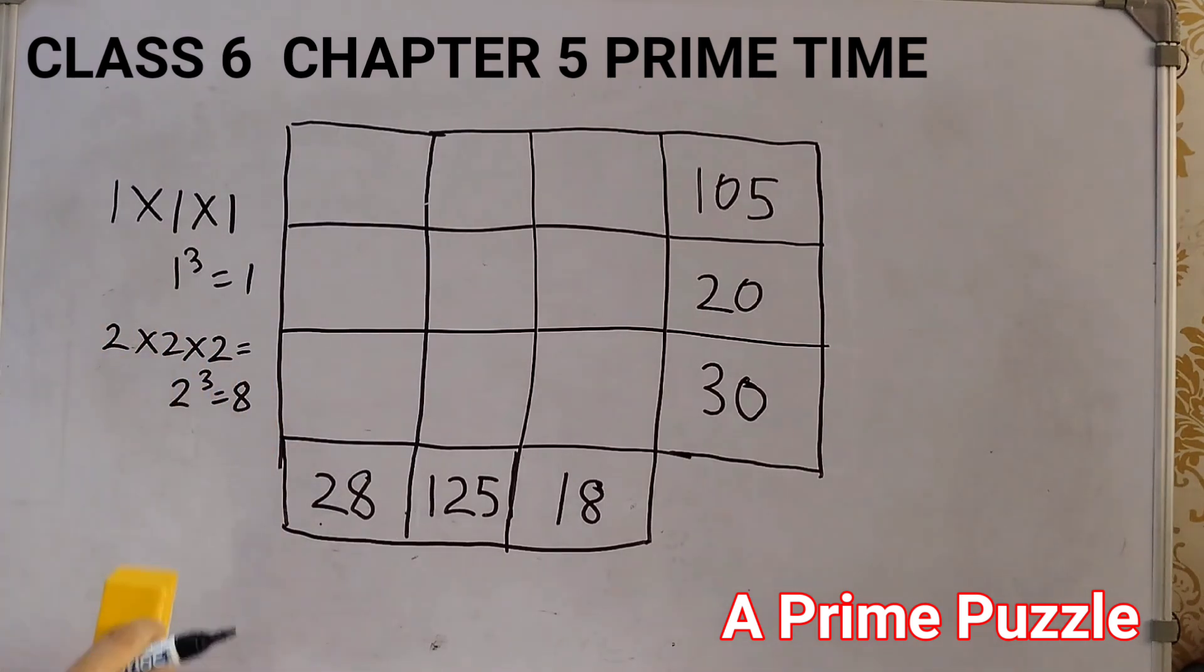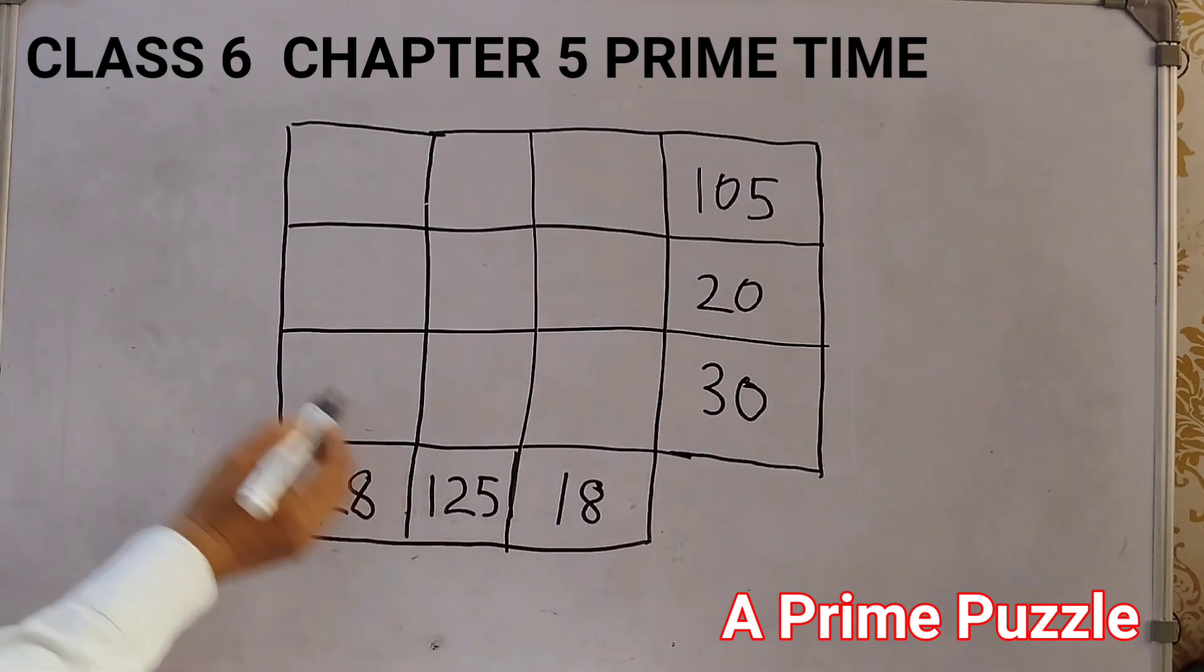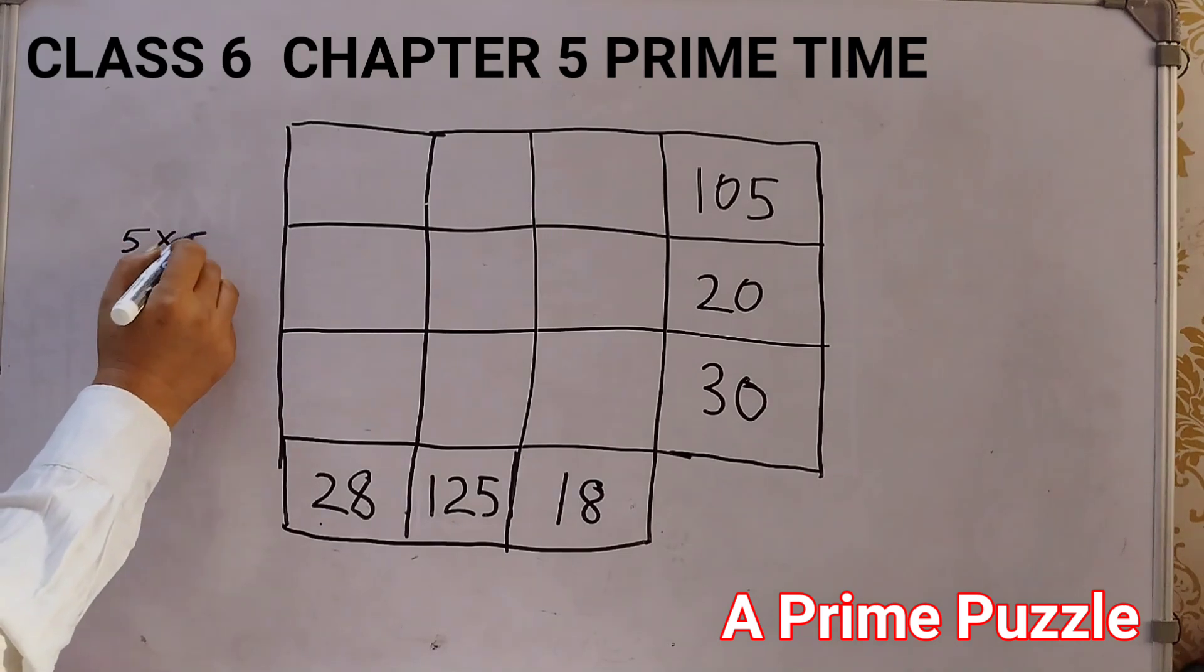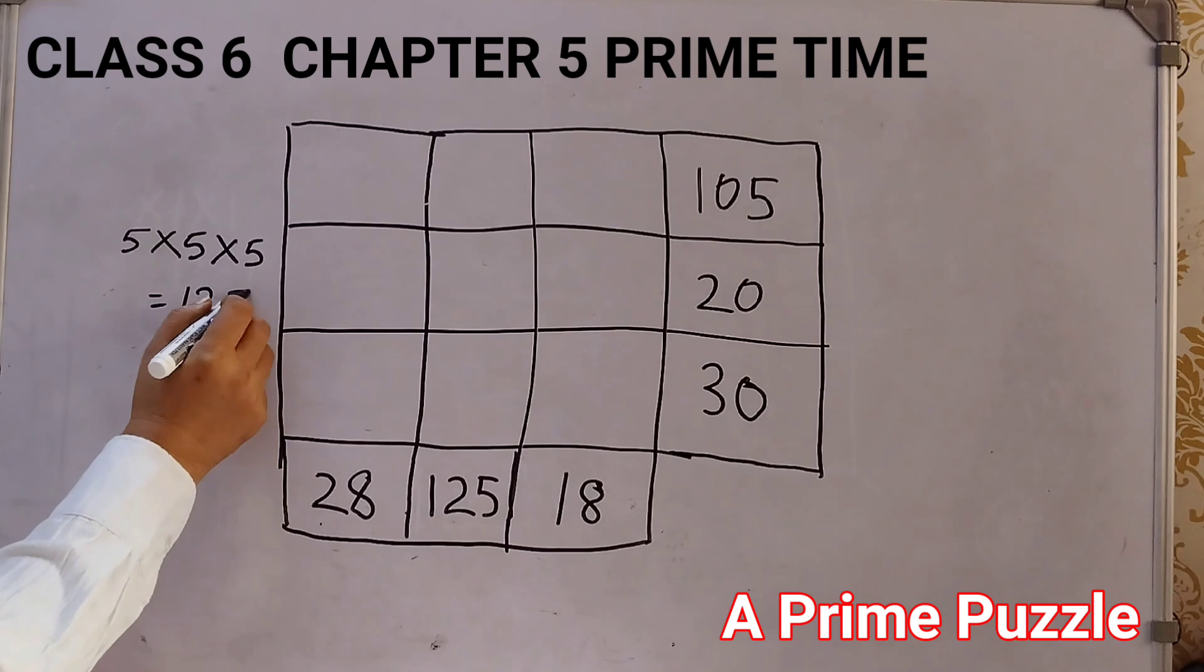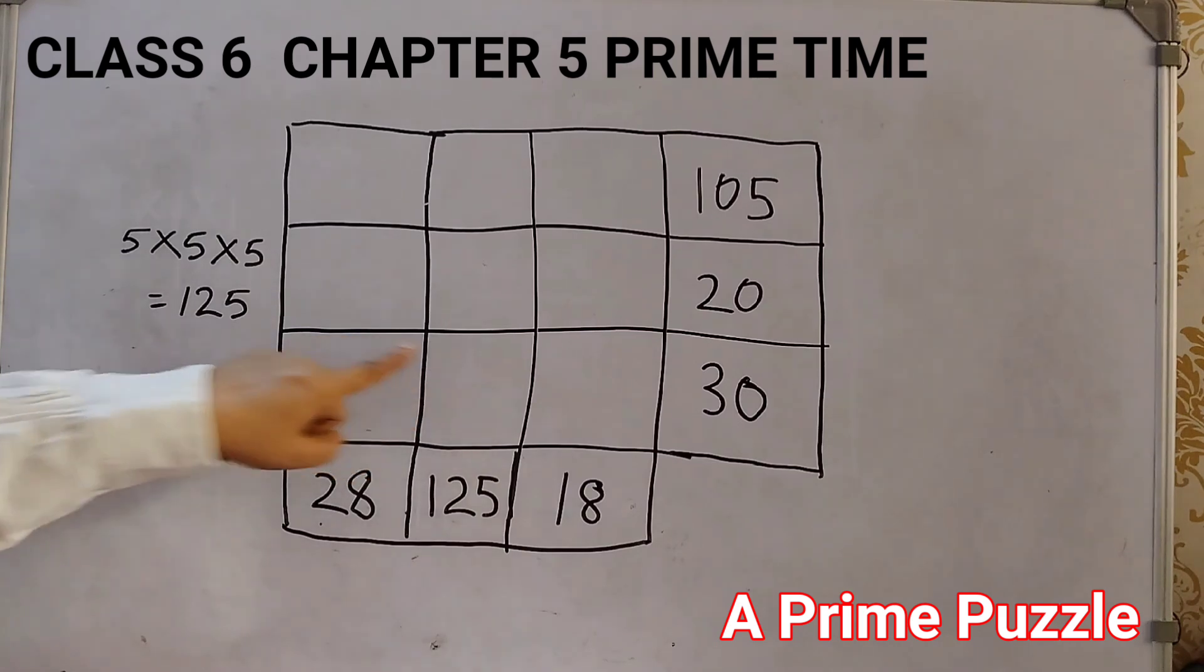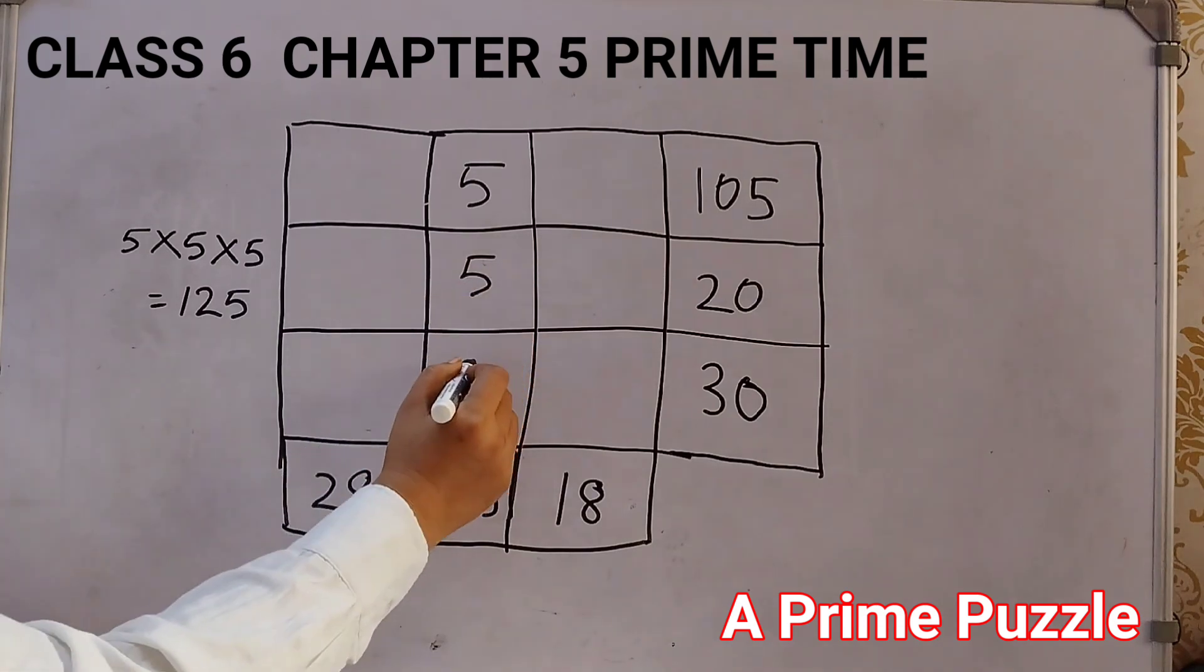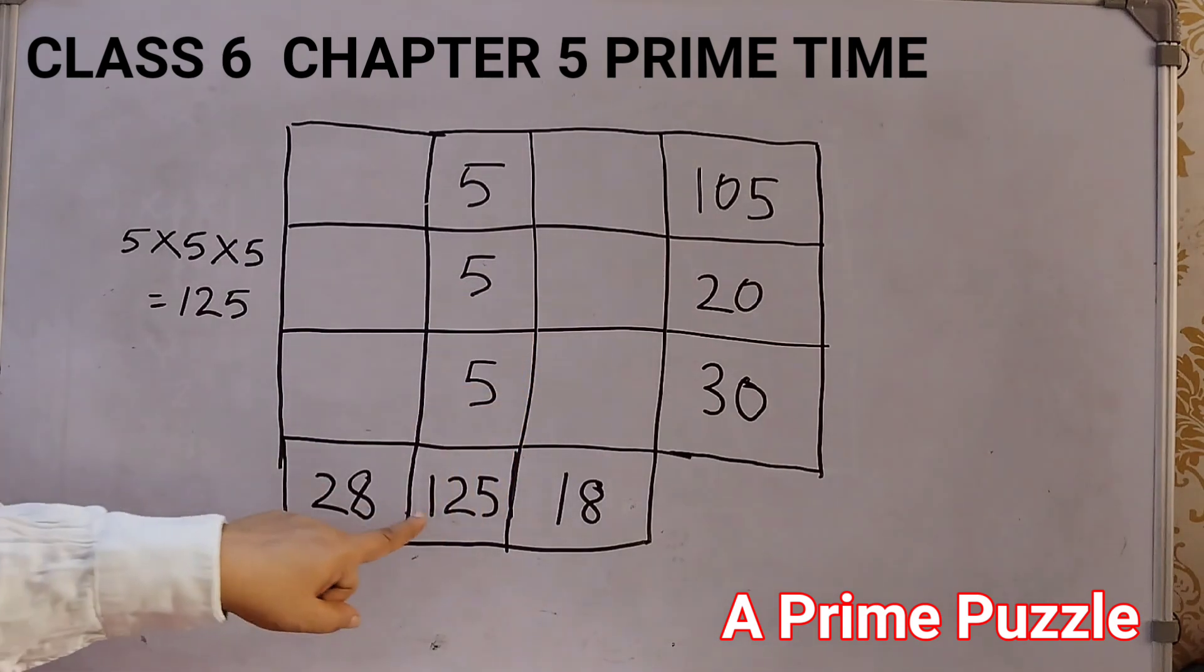Now, we see here that we got 125. 125 is 5 into 5 into 5. This we have learned in chapter number 1, Patterns. Right? So, 5 into 5 into 5, that means, this column, I can fill it up with 5. Because it's all 5, the same number. So, let's fill it up. 5 into 5 into 5 is 125. So, 1 column done.